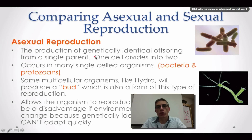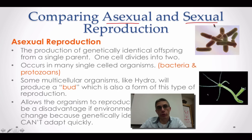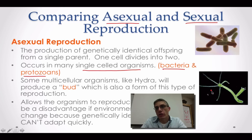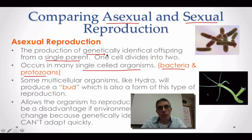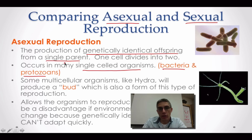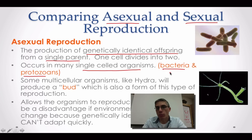We're also going to briefly look at the differences between asexual and sexual reproduction. If you're a bacteria or a protozoan — which are single-cell creatures — or maybe a very simple multicellular creature, you might perform asexual reproduction. What that means is we have a single parent that's going to produce genetically identical offspring, so the offspring are exactly the same as the parent genetically.